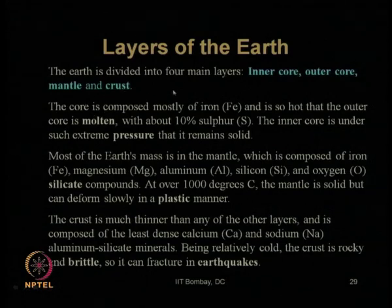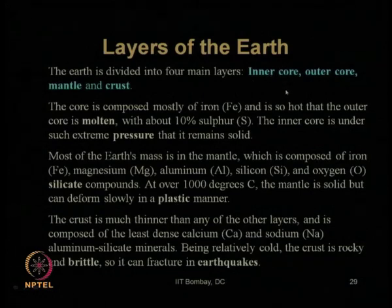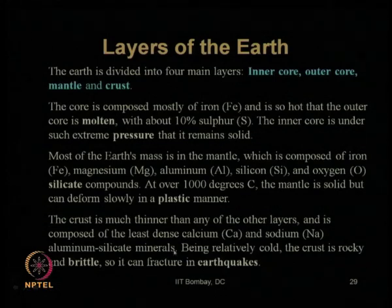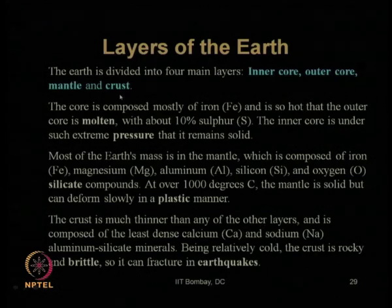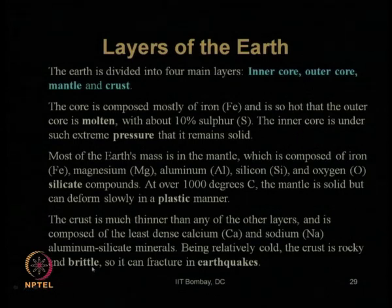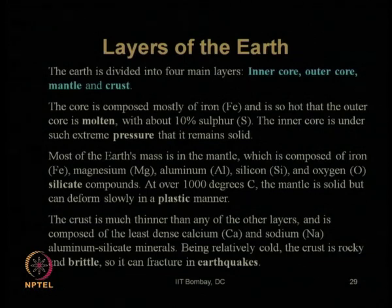We also learnt that once we divide the earth's interior into four major regions — inner core which is solid, outer core which is fluid, and the mantle and crust region — we found that among these layers the coldest and thinnest one is the crust. The crust is a rocky and brittle type material, so it can break very easily, creating fractures through which energy from the earth's interior is released, causing earthquakes.